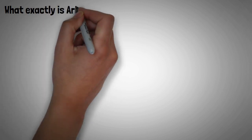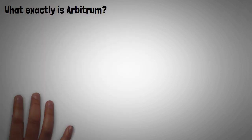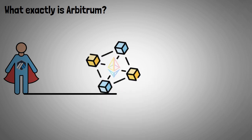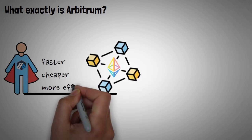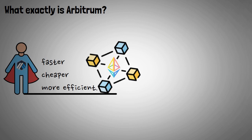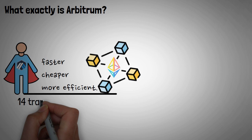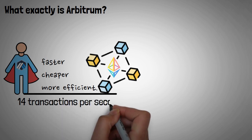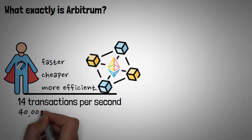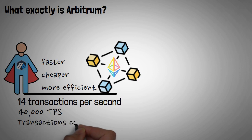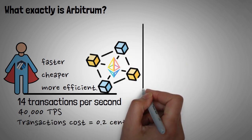What exactly is Arbitrum? It's like the superhero of the Ethereum blockchain — it swoops in to make everything faster, cheaper, and more efficient. Think of it like the Flash, but for blockchain transactions. While Ethereum manages a mere 14 transactions per second, Arbitrum races ahead at 40,000 transactions per second. Transactions cost several dollars to complete on Ethereum, while they cost about 2 cents on Arbitrum.